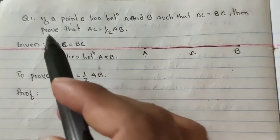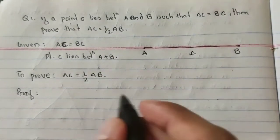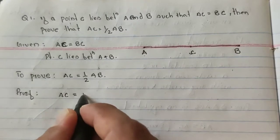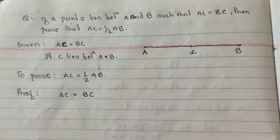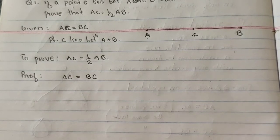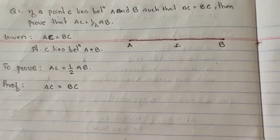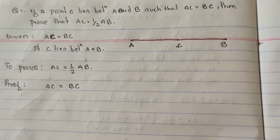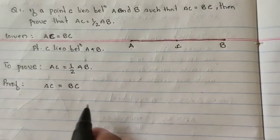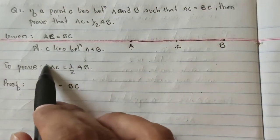Before doing your question solution, don't forget to write all these: given, what to prove, and then prove — because in mathematics you will get marks according to your steps. So here I am writing AC is equal to BC. Pay attention because this type of question you need to understand; it cannot be solved by mugging up.